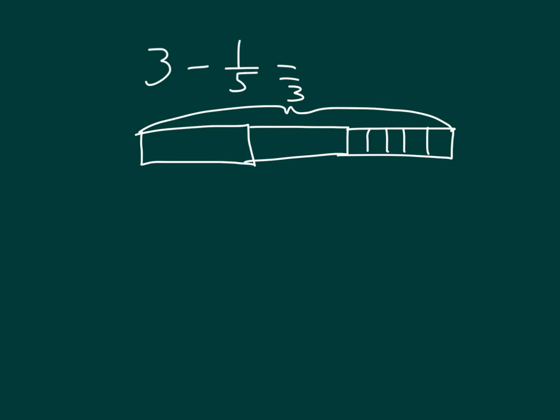How will we indicate that we are subtracting 1 fifth? Right, we would cross it out. So then we're left with 1, 2 wholes, 1 fifth, 2 fifths, 3 fifths, 4 fifths. So 3 minus 1 fifth is equal to 2 and 4 fifths.